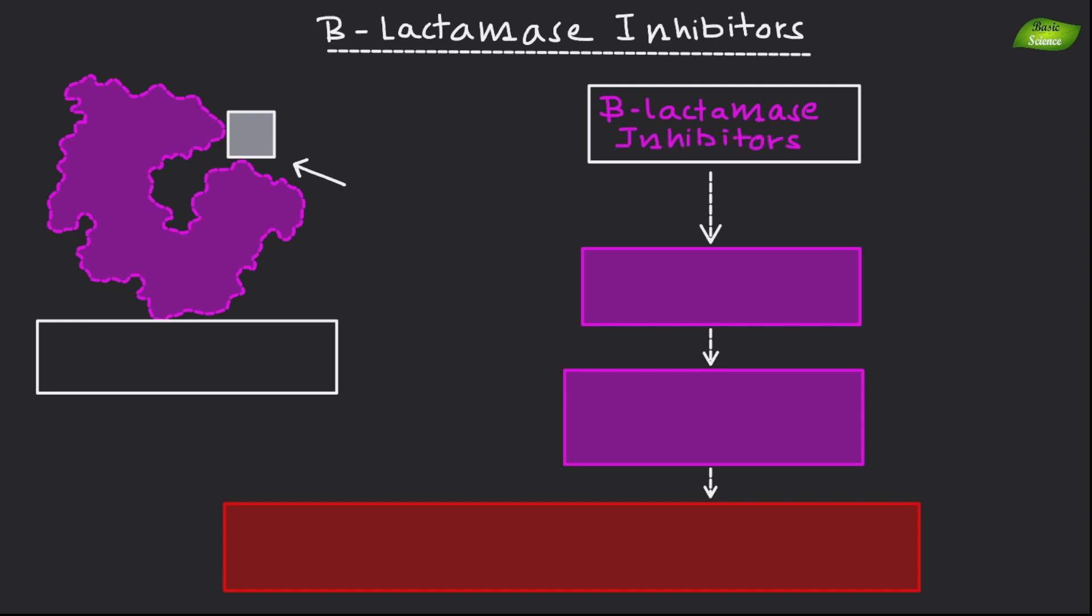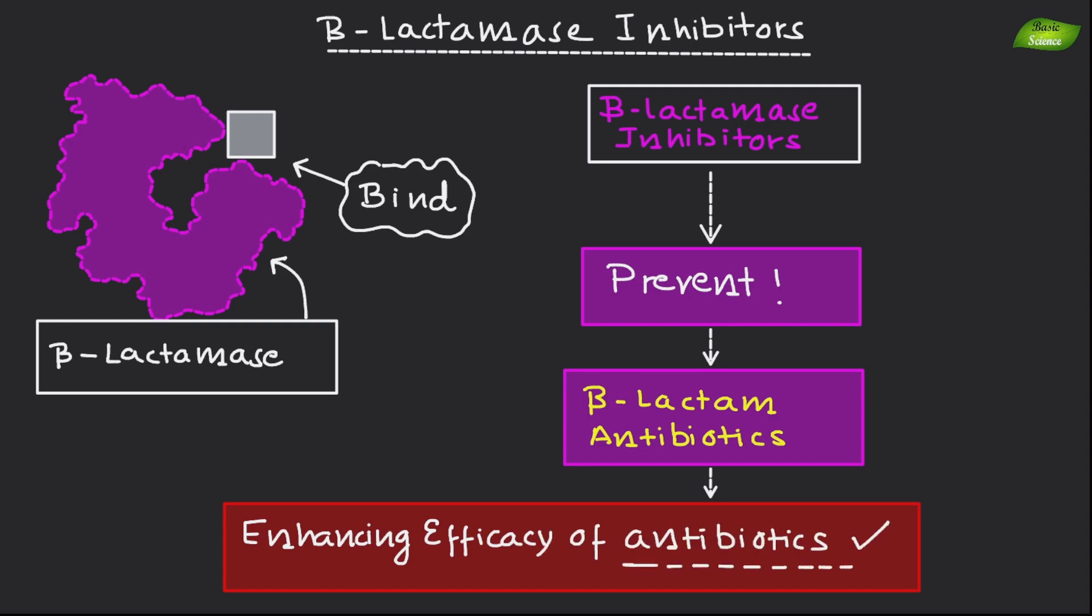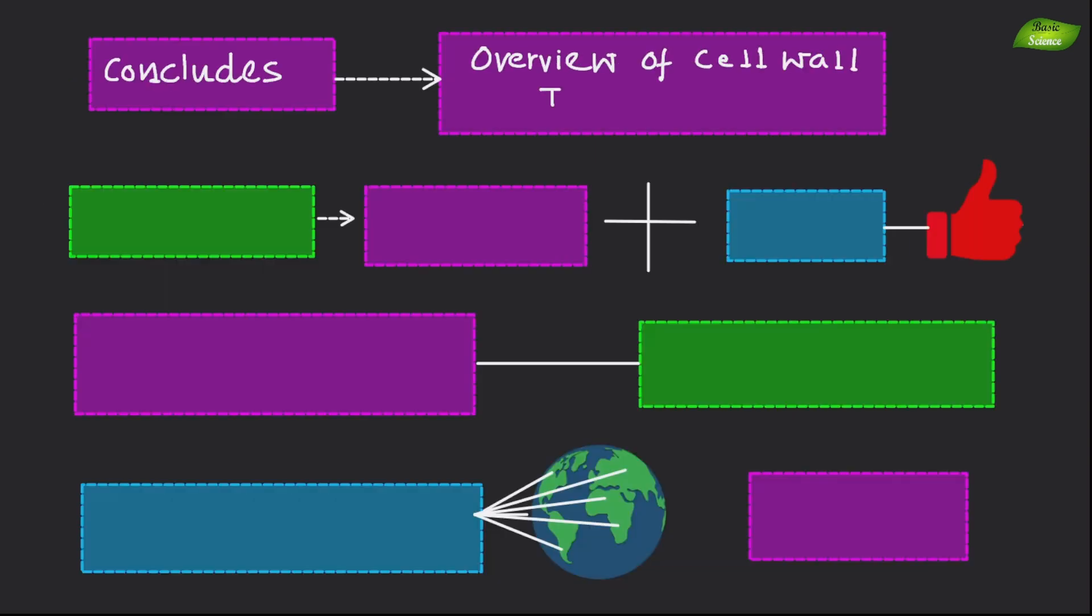Beta-lactamase inhibitors function by binding to beta-lactamases and preventing these enzymes from inactivating beta-lactam antibiotics, thereby enhancing the efficacy of antibiotics. This concludes our overview of the topic.